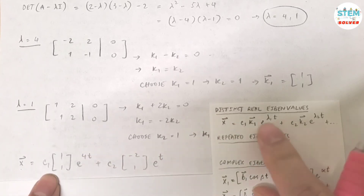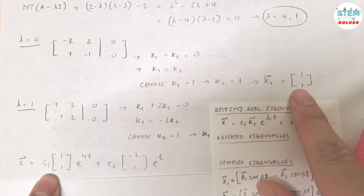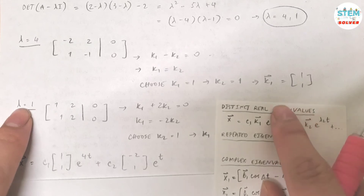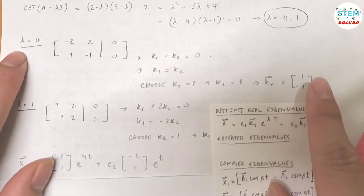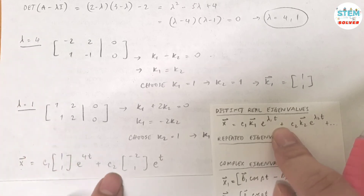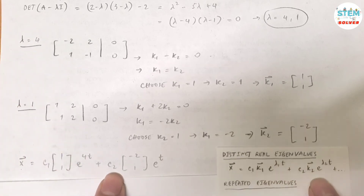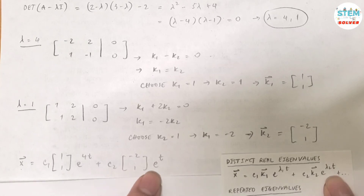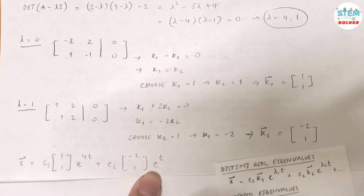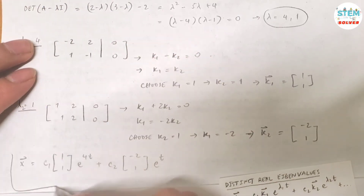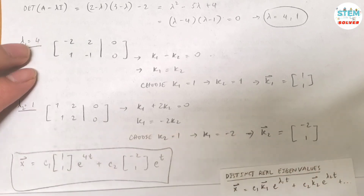So x equals C1 times k1, which is [1, 1], times e to the lambda1 t — lambda1 corresponding to k1 is 4, so e to the 4t — plus C2 times k2, which is [negative 2, 1], times e to the lambda2 t, which is e to the t because lambda2 is 1. That is your final general solution.